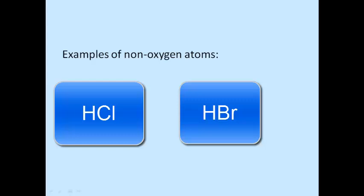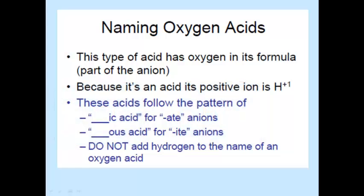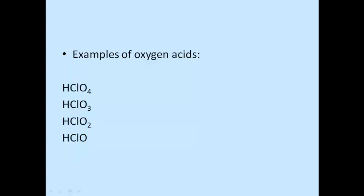Here are some examples of non-oxygen acids. Naming oxygen acids: this type of acid has oxygen in its formula as part of the anion. These acids follow the pattern below. Here are some examples of oxygen acids.